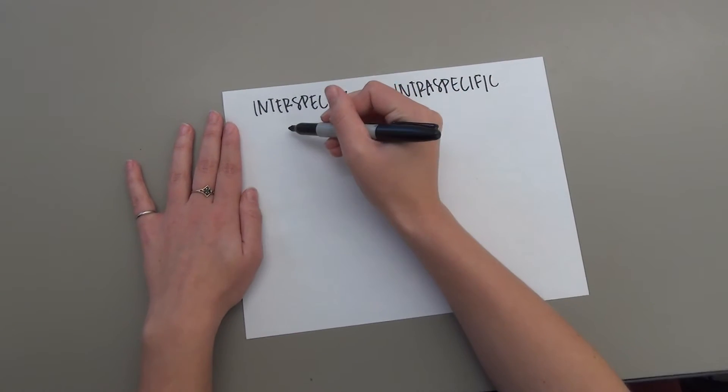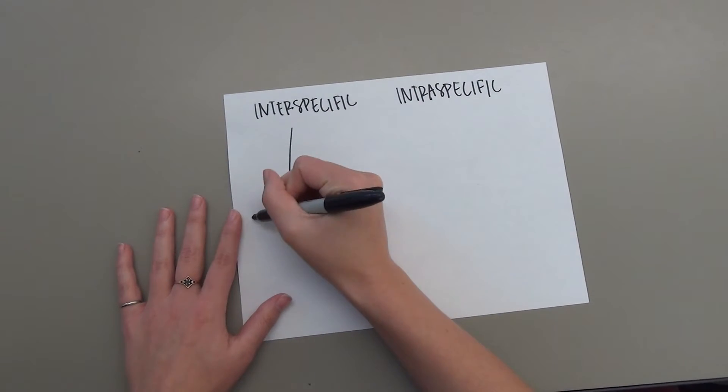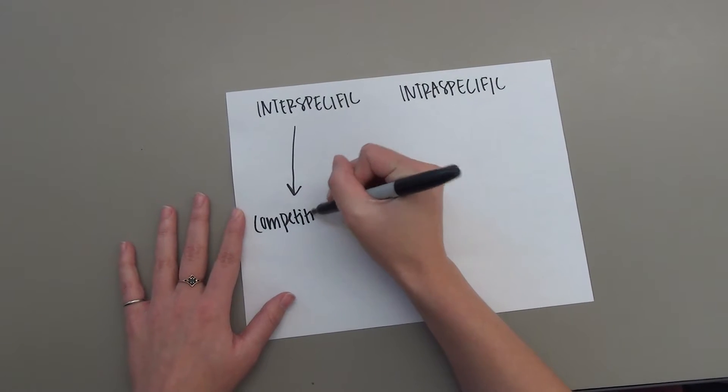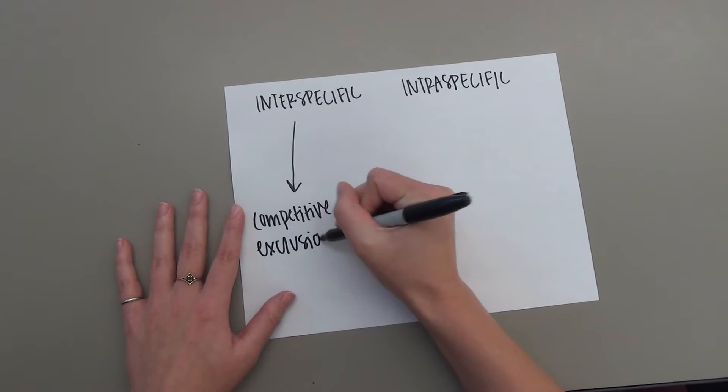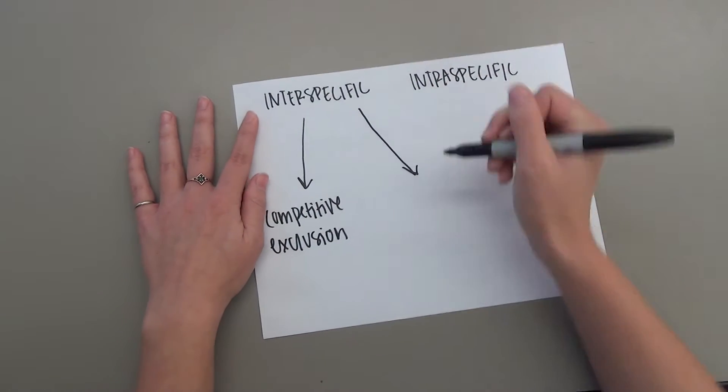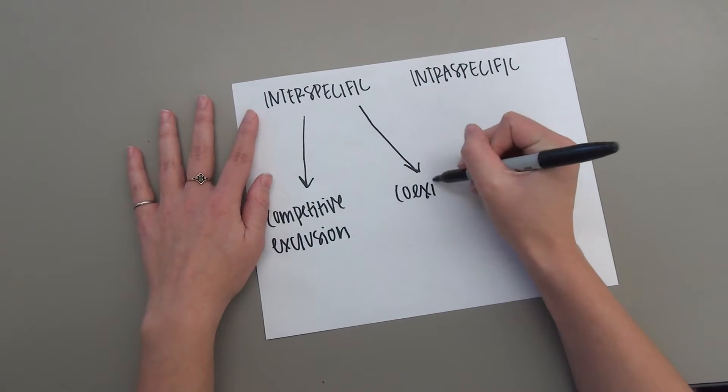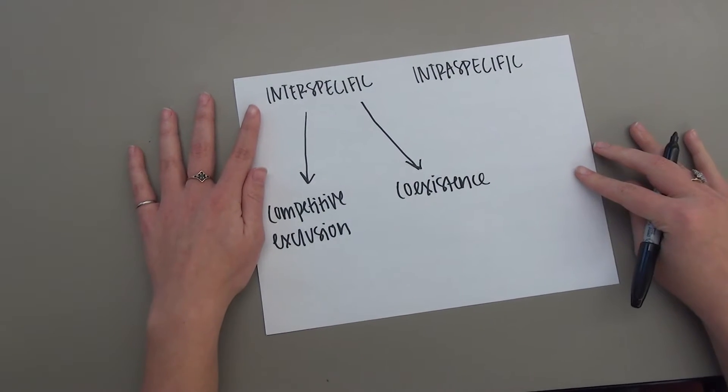Interspecific competition can range in degree of severity. Competitive exclusion is where one species outcompetes the other for available resources, which could lead to the extinction of the inferior species. Most species in competitive relationships are able to share essential resources, allowing for both species to persist, which is known as competitive coexistence.